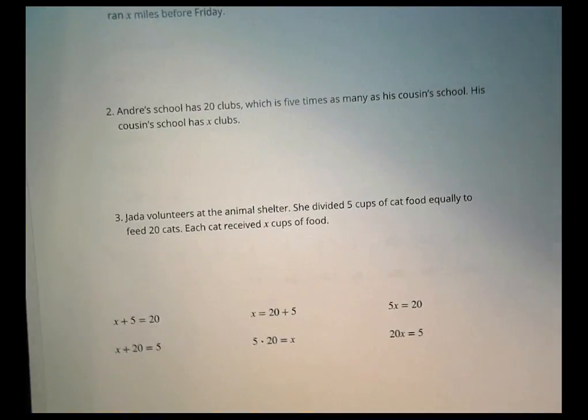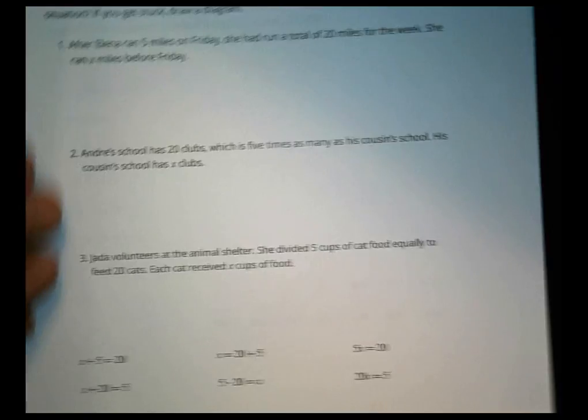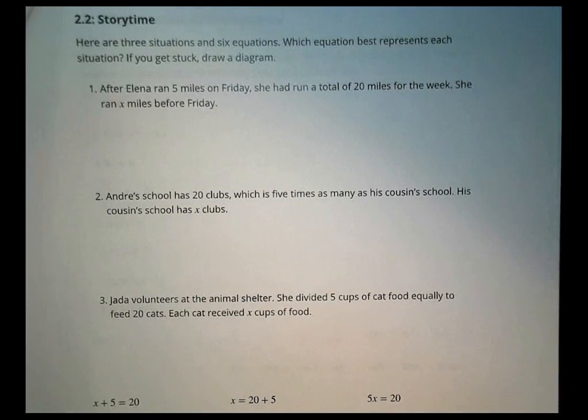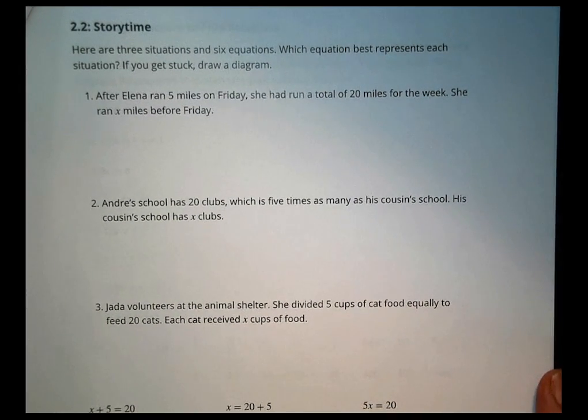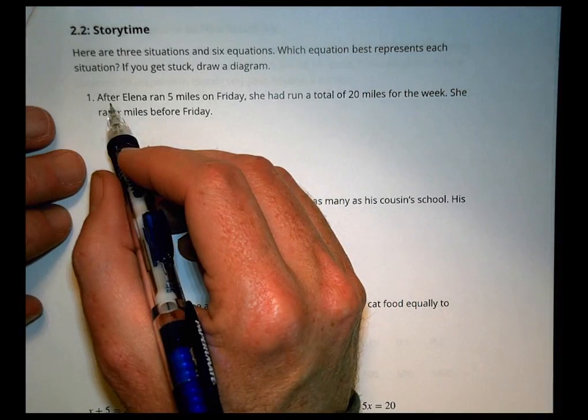That's important to recognize that when you're dealing with an equation, an equation needs to be true. If it's not going to be true, then it's not really an equation. And you've got something a little bit off you have to adjust. Let's look at the next activity. The next activity is called story time. It says here are three situations and six equations. And so the six equations are down on the bottom. Which equation best represents each situation. And if you get stuck, draw a diagram.